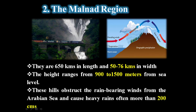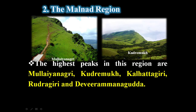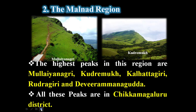These hills obstruct the rain-bearing winds from the Arabian Sea and cause heavy rains, often more than 200 centimeters. The highest peaks in this region are in the Malnad region, which has a large number of peaks. The most notable among them are Mullayanagiri, Kudremukh, Kalhatthagiri, Rudragiri, and Deviramana Gudda — all located in Chikkamagaluru district.